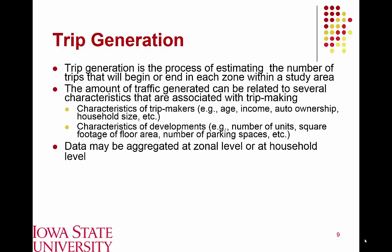Trip-making data is aggregated at the zonal or household level rather than predicting individual behavior. Census data is collected at the household level, and households of similar size and characteristics — say, three members and two automobiles — tend to show relatively consistent trip-making behavior. This aggregation is partly due to convenience in terms of data sources, and it's also easier from a resource standpoint to develop models at the zonal or household level versus the individual level.